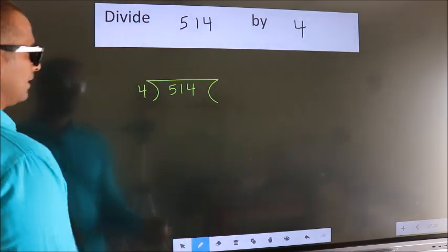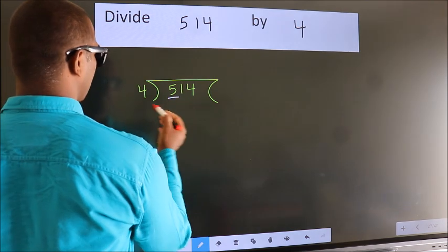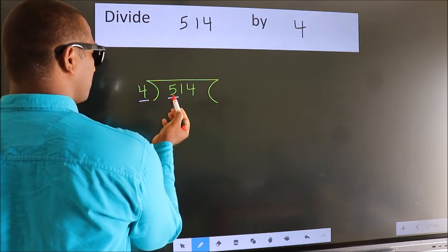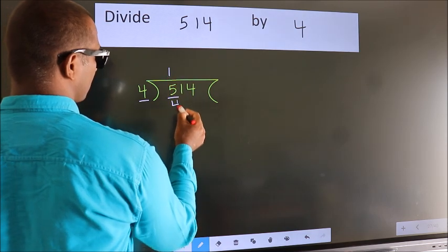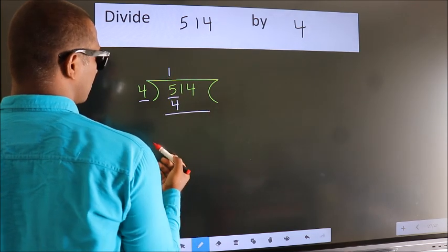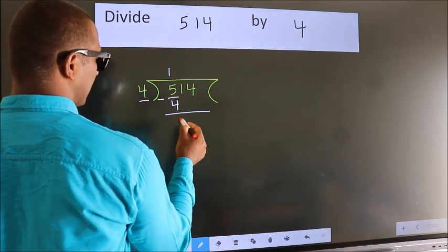Next. Here we have 5, here 4. A number close to 5 in 4 table is 4 once 4. Now we should subtract. We get 1.